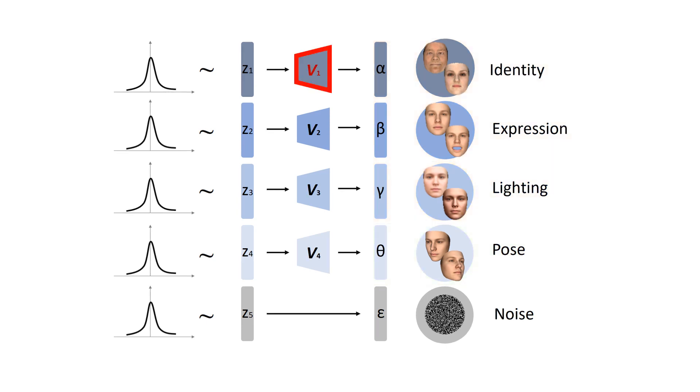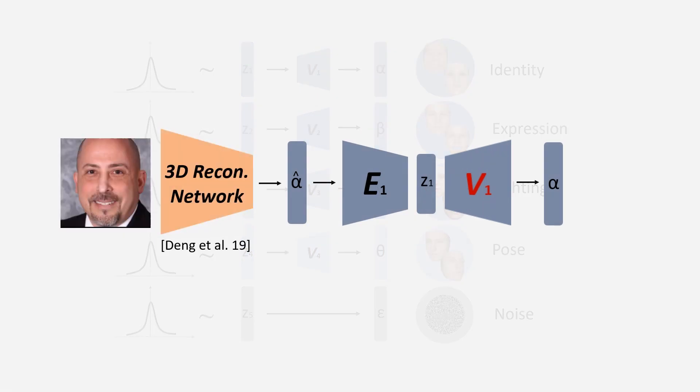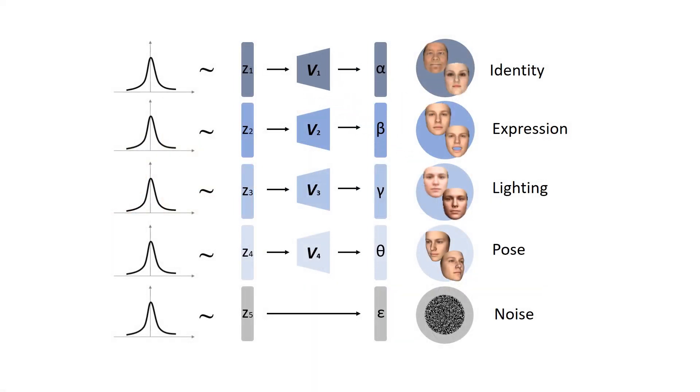To obtain each vi, we use a 3D face reconstruction network to extract identity, expression, lighting, and pose coefficients from training images, and train a VAE with vi as decoder.